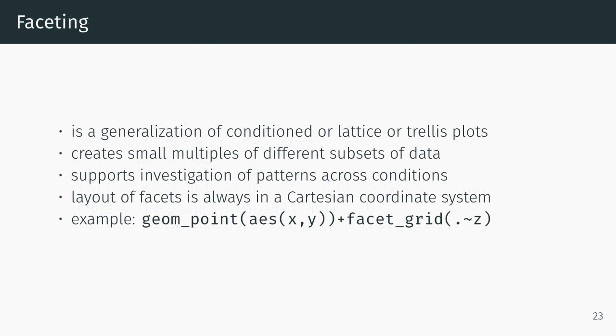Faceting is a generalization of what's often known as conditioned plots or lattice plots or trellis plots. R uses both of those latter terms. It creates small multiples of different subsets of data and supports investigation of patterns across conditions. The layout of facets is always in a Cartesian coordinate system. Here's an example specification of one geom point scatter plot, then there will be some other variable that will cause us to have a grid of those x and y plots.